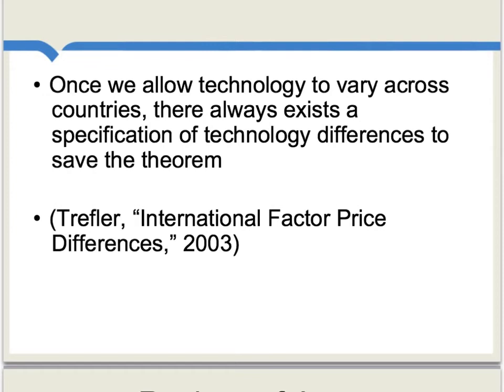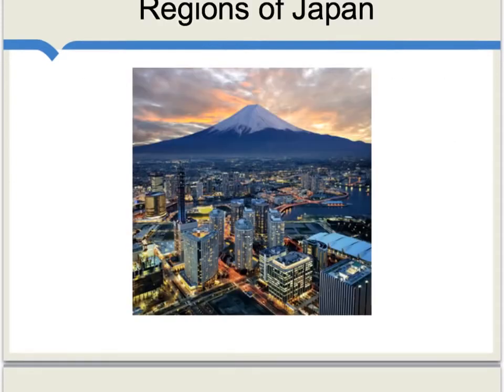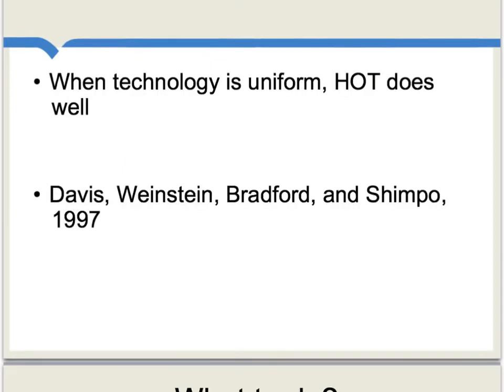There's even a way to make the Heckscher-Ohlin theorem a kind of tautology: if you observe the U.S. exporting labor-intensive goods, simply postulate technologies such that the effective labor in this country is so high that the U.S. is actually labor-intensive after all. There is also an interesting test of the Heckscher-Ohlin theorem within a single country, looking only at regions of Japan. Within Japan — a relatively homogeneous country — technology across different regions is more or less constant. And the result? When technology is uniform, the predictions of the Heckscher-Ohlin theorem do pretty well; it is the capital-intensive regions of Japan that export capital-intensive goods to other parts of Japan.